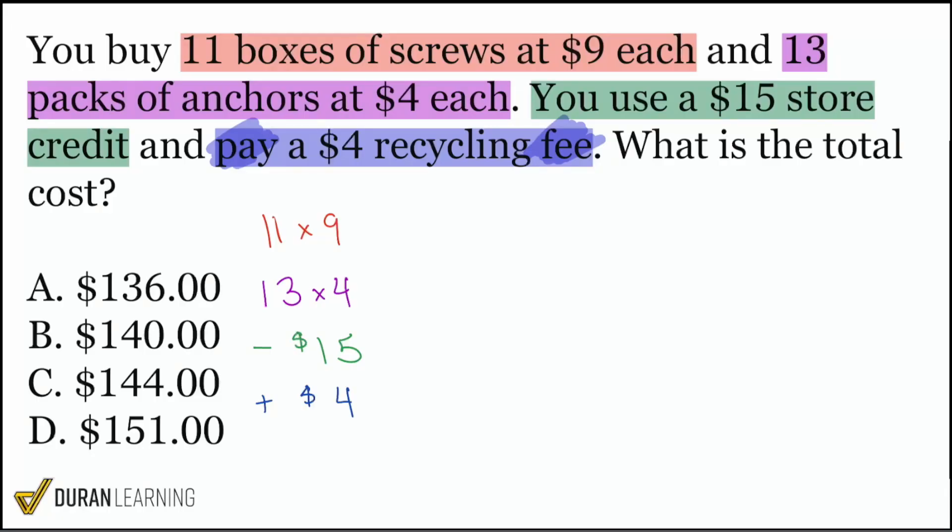We'll get the cost of the screws, 11 times 9. We'll get the cost of the anchors, 13 times 4. We'll subtract that store credit that we have, and then we'll add on that four dollar fee. Once we do all of that together, then boom, we are good. We'll have that final amount. So let's get to work here.